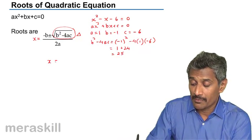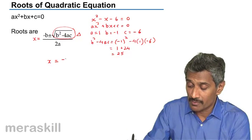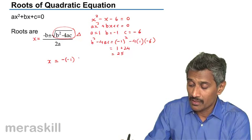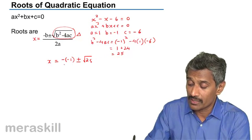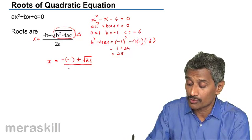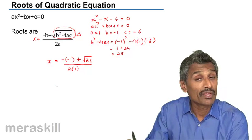So x would be -b, which is -(-1) ± √25, where 25 is b² - 4ac, all over 2a. That is 2(1).